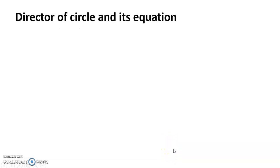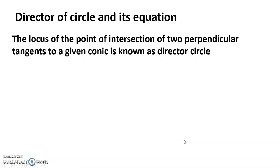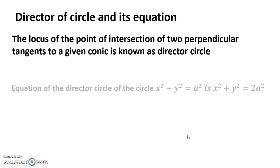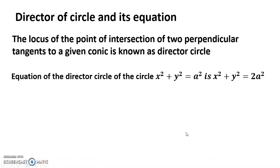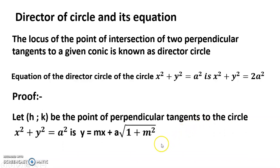Hello dear friends, welcome to my channel. Today's discussion is the director circle and its equation. The locus of the point of intersection of two perpendicular tangents to a given conic is known as the director circle. The equation of the director circle of the circle x² + y² = a² is x² + y² = 2a².